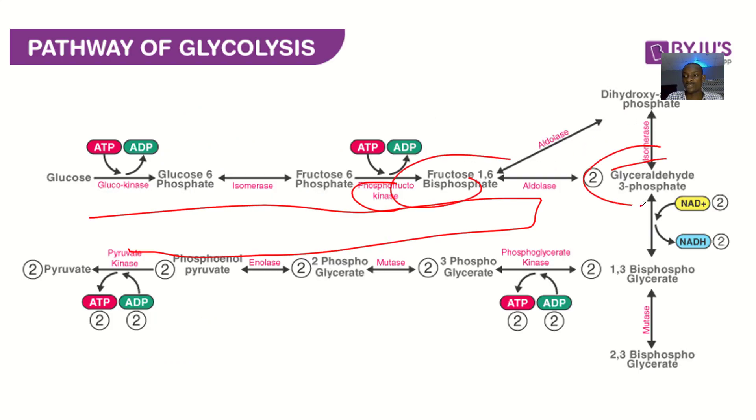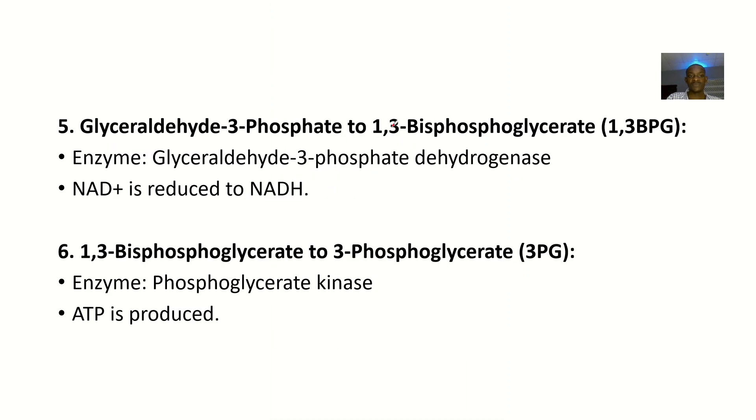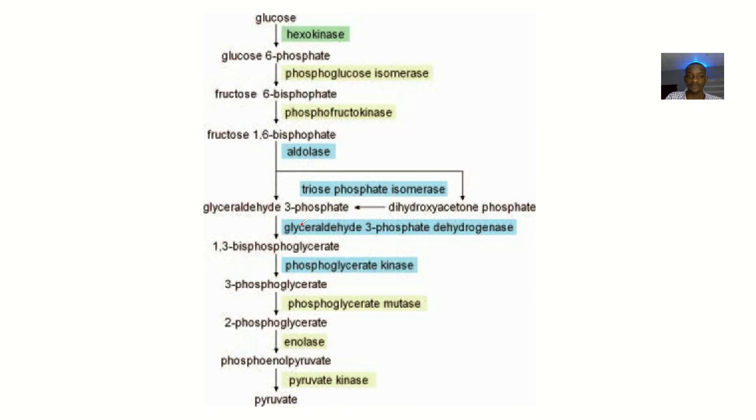The fifth step is glyceraldehyde-3-phosphate converted to 1,3-bisphosphoglycerate. The enzyme there is glyceraldehyde-3-phosphate dehydrogenase.